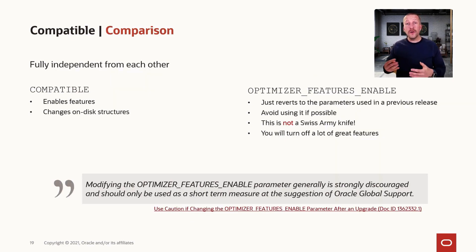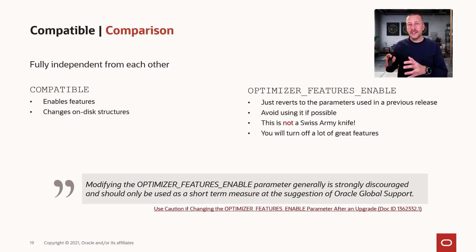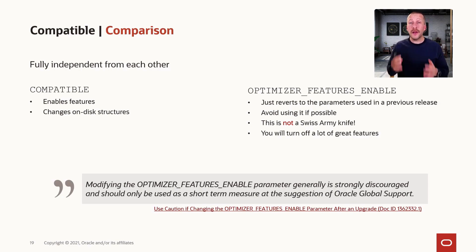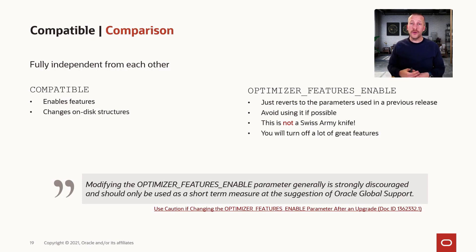When we talk about compatible, customers often also mention optimizer_features_enable. We already learned what the compatible parameter is about. Let's briefly touch upon optimizer_features_enable: it controls the use of certain new features in the database optimizer. Following an upgrade, some customers prefer to keep optimizer_features_enable at a lower level because it gives them the idea of good plan stability after the upgrade. You might be lucky in some situations, but if your motivation is plan stability, you should look at SQL plan management, which is a much better fit for that purpose. You should only use optimizer_features_enable under the guidance of Oracle support — it's not a Swiss army knife or a magic wand to turn on good performance.